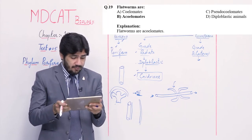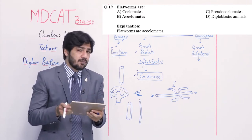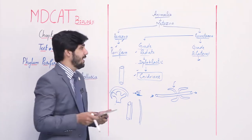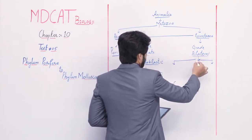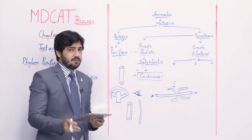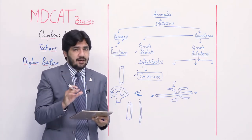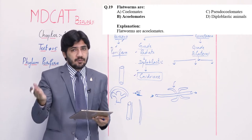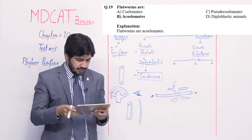Question number 19: flatworms are — alpha coelomates, beta acoelomates, charlie pseudocoelomates, and delta diploblastic animals. Within grade Bilateral, further division is on the base of body cavity. The first category is acoelomate — no body cavity exists because the body is dorsoventrally compressed. Phylum Platyhelminthes (also called flatworms) is dorsoventrally compressed. Right option is beta — acoelomates.